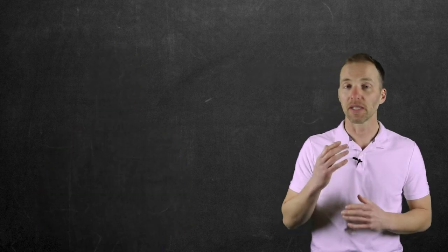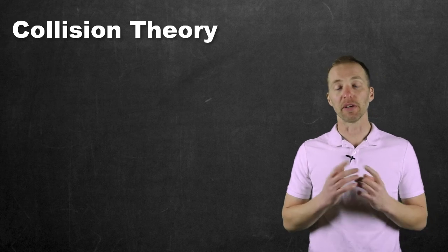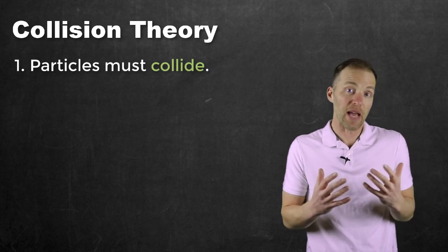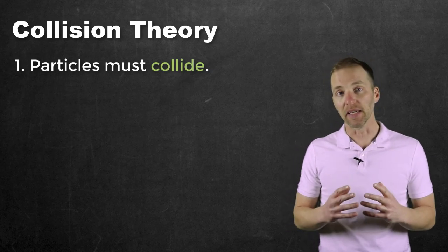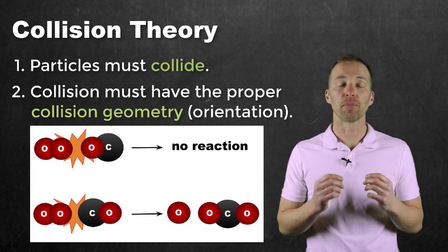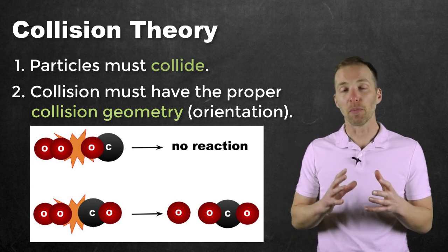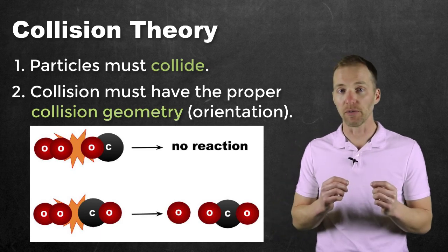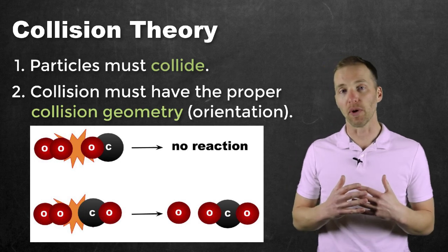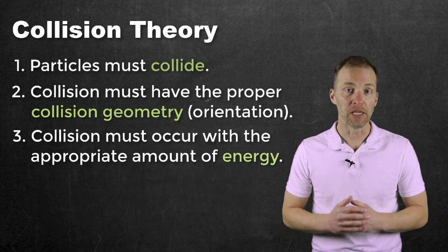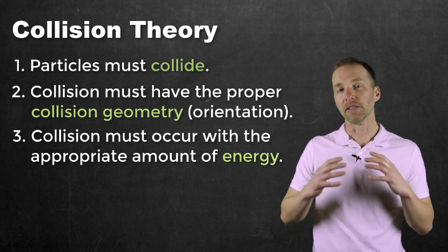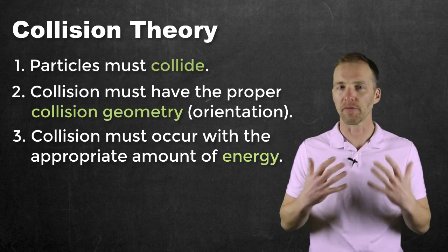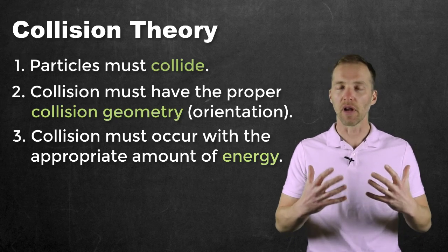There is something called collision theory, and there are three main points. First, the particles have to collide — in order to react, they have to come together. Secondly, they have to collide at the appropriate orientation, meaning those molecules have to be in the correct geometry; certain atoms have to collide with certain atoms in order for bonds to break and new bonds to form. And finally, there has to be the appropriate amount of energy — just because they collide and at the appropriate orientation, if there's not enough energy to overcome the attractive forces of the bonds they're breaking, then there's not going to be a reaction either.